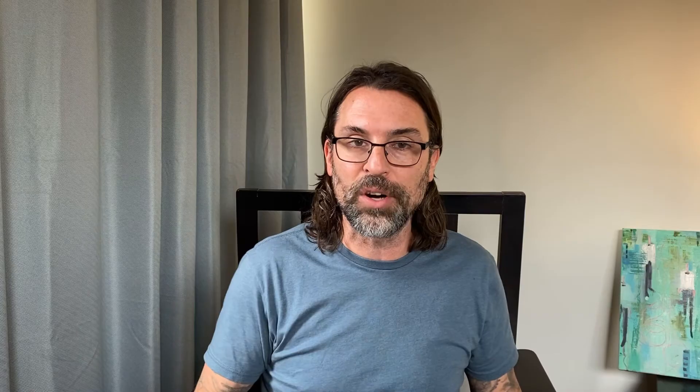Perpendicular bisectors are where you've got two points on a coordinate plane and you are cutting the distance between those two points in half with a line that is perpendicular to the line that connects those two points. It's kind of a lot of information. Let's start sorting it out and see how this works. So what is a perpendicular bisector? It's a line that goes through the middle of two points or the middle of a line segment, which is another way of saying two points, and it creates a right angle at the point of intersection.